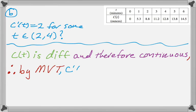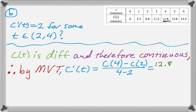And not only that, we know that C prime of T equals C of 4 minus C of 2 over 4 minus 2, which is 12.8 minus 8.8 over 2, which is 2.